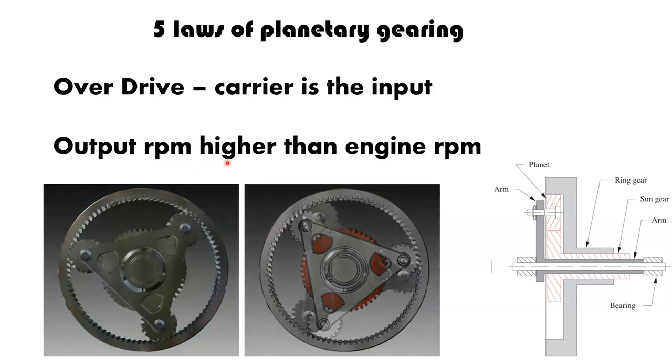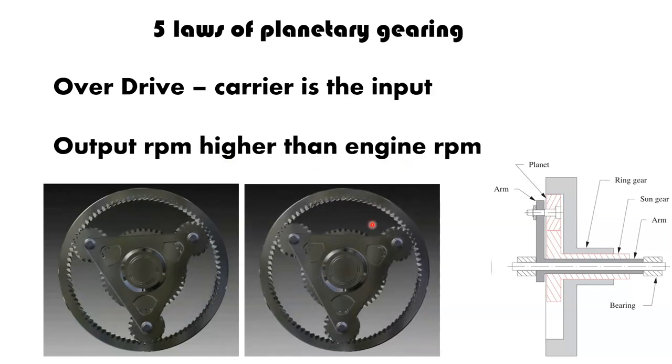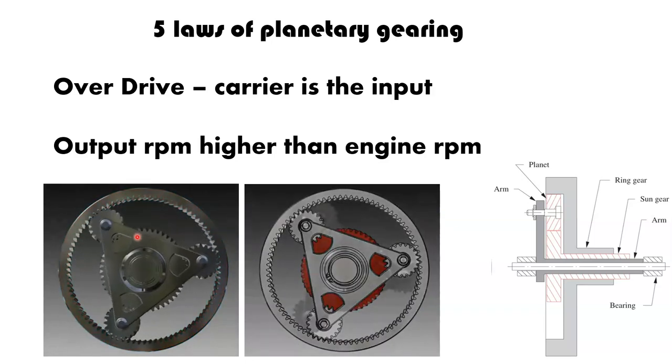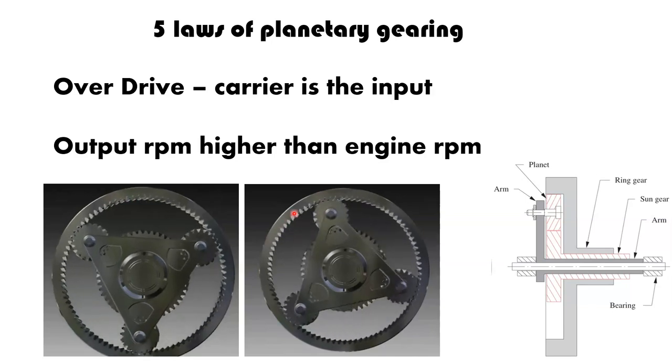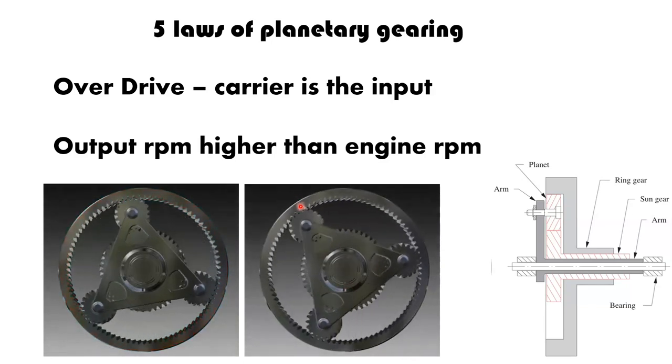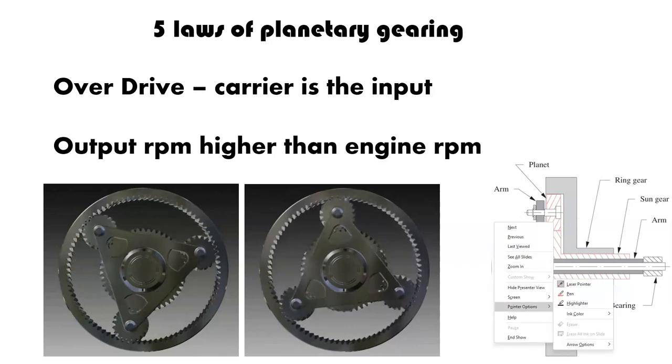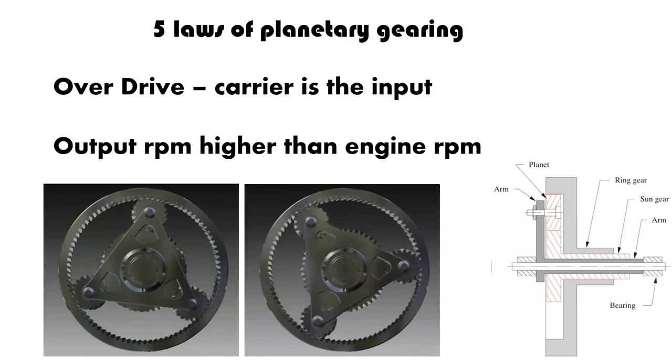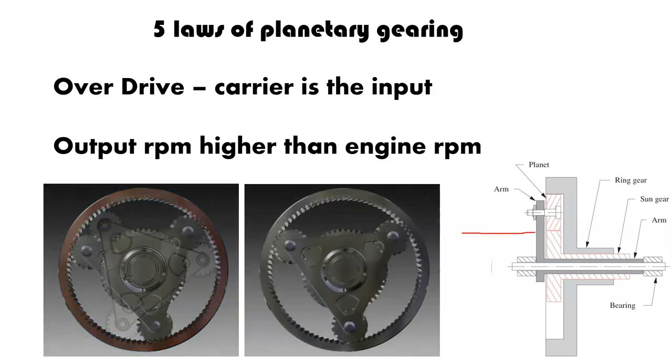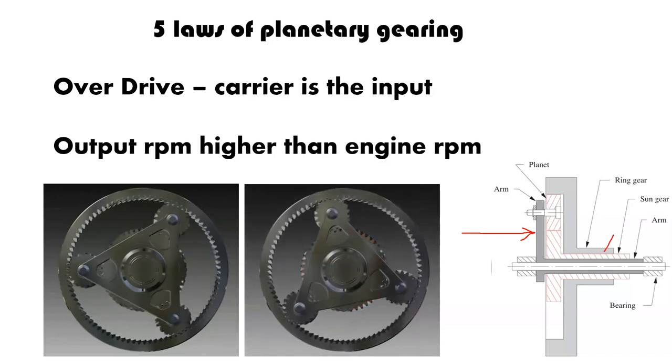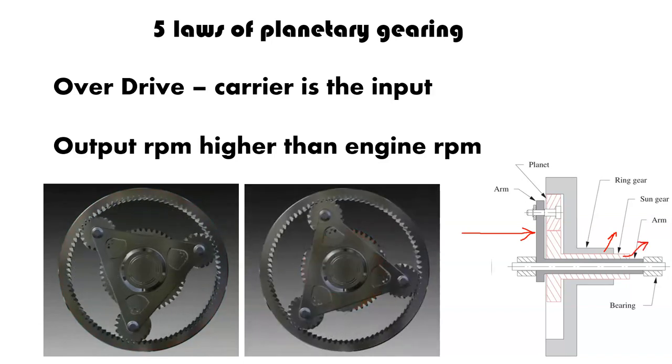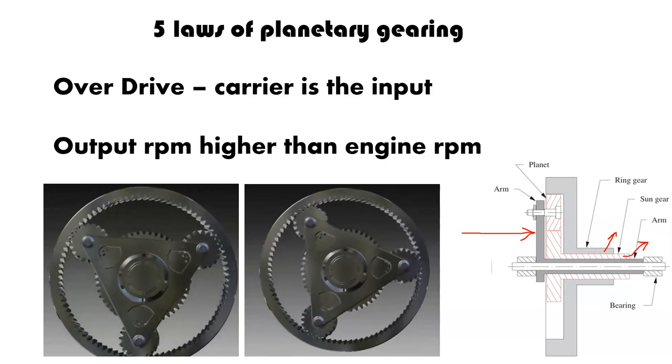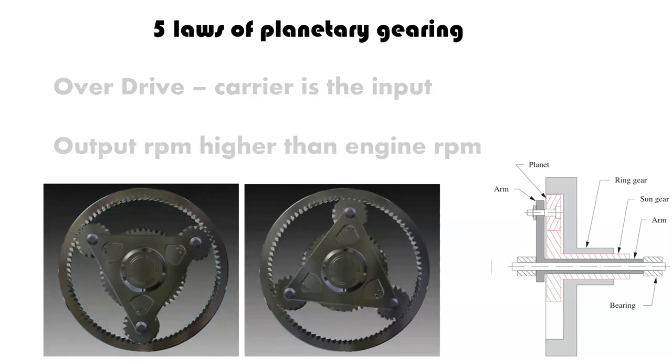Your output RPM is higher than whatever the engine RPM is, whatever is coming into the carrier is being amplified. And it can either go through to the sun and your ring is locked, or it can come out through the ring and your sun is locked. So, this would, one of these would be your output. So, if we were to look at this little diagram here, your carrier is your input. So, you've got power coming into your carrier. And the output can either be the ring, leaving through your ring, or it can be leaving through your sun. Either one of those will give you an overdrive condition. So, this will be higher than whatever is coming through your carrier.